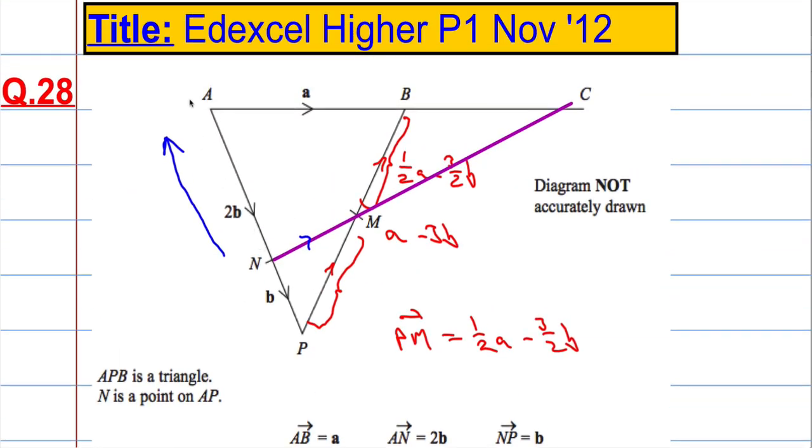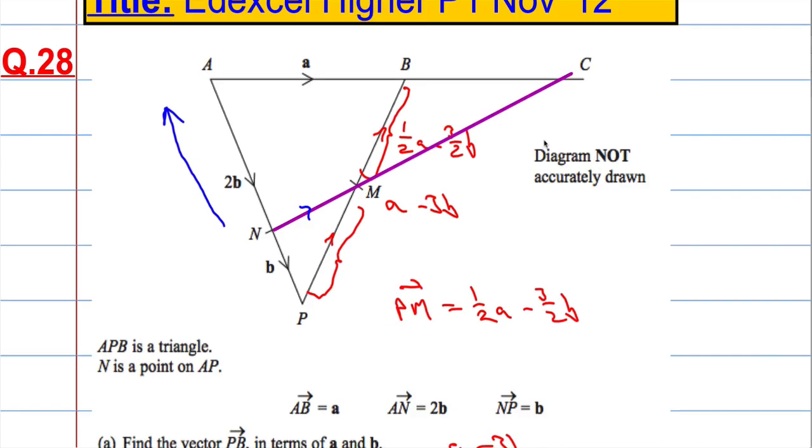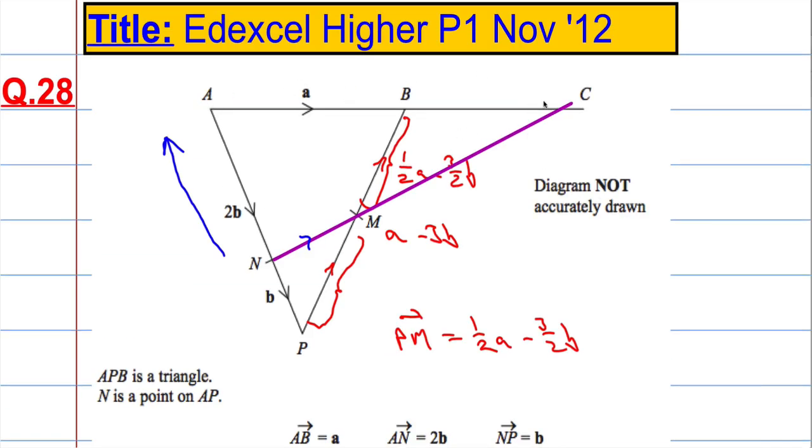Well, NA is going to be minus 2b. Remember, the direction from A to N is this, is in this direction. So direction from N to A is going to change the sign. So instead of 2b, we're going to have minus 2b. Plus, and then AC, from A to C,